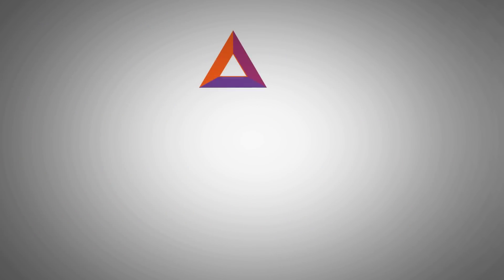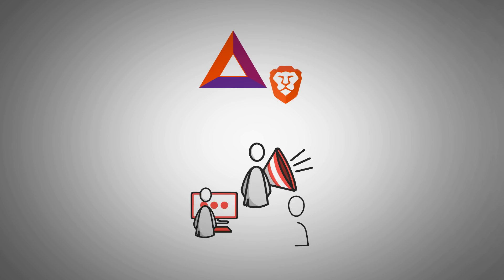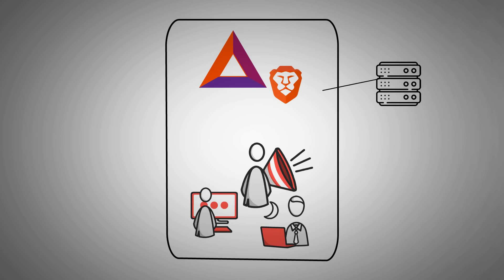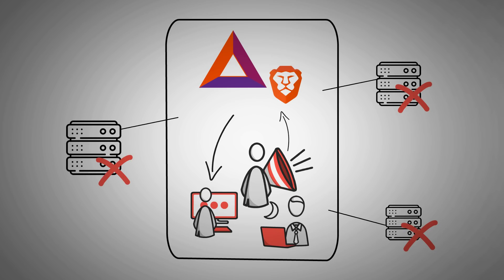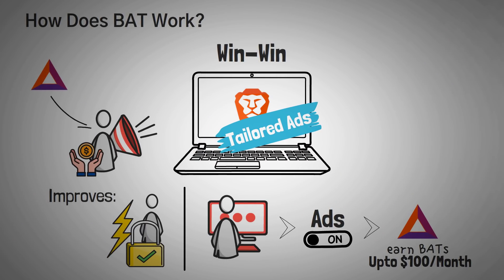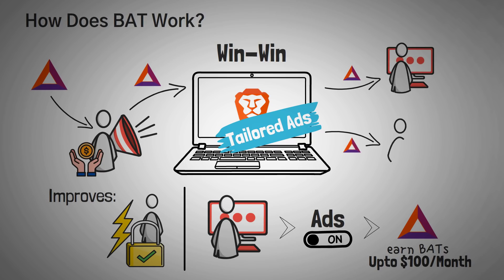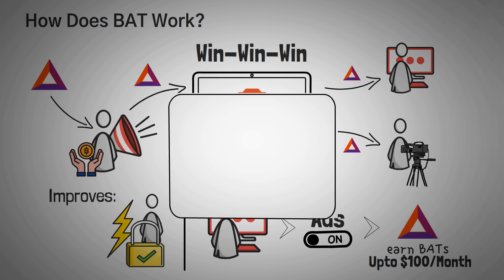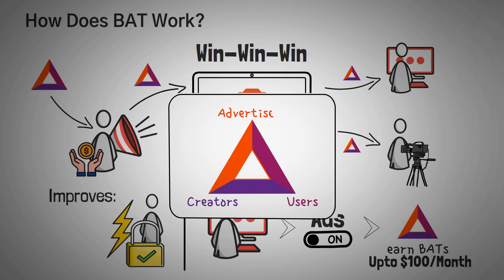A distinguishing benefit of using Basic Attention Token and the Brave web browser is the blockchain technology, which ensures that users, advertisers, and publishers do not need to depend on external servers. The platform matches ads locally on the machine while also offering constant content flow and faster downloads. Someone could hack Facebook's database and see where you were eating last night, but they can't do that with Brave's Basic Attention Token model. In summary, advertisers buy Basic Attention Tokens to spend on advertising, and those spent tokens are then given both to the users that see the ads and the creators of the content that the ad is shown on — it's a win-win-win, which is why the Brave logo has three sides: one for users, one for creators, and one for the advertisers.